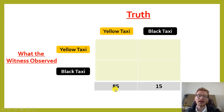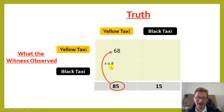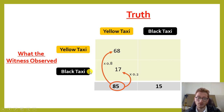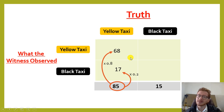Out of 85 yellow cars, the witness will identify 80 percent of them as yellow: 0.8 times 85 equals 68, so he identified 68 cars as yellow. The remaining 20 percent — which is 17 cars — he actually identified falsely as being black taxis. So there is a false positive.